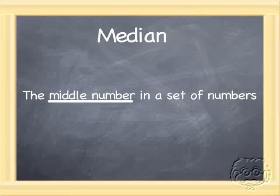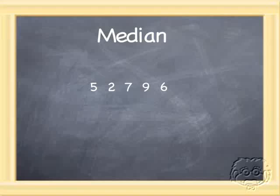Now say you're given a set of numbers like these and you're told to find the median, the middle number. Well the first thing you're going to want to do is put them in order from smallest to biggest.